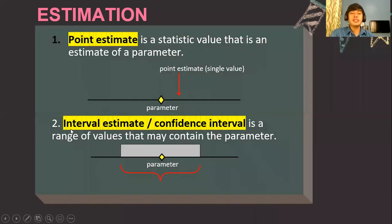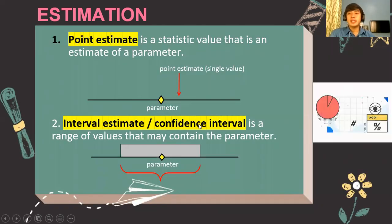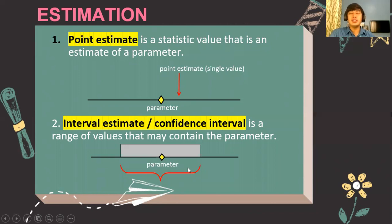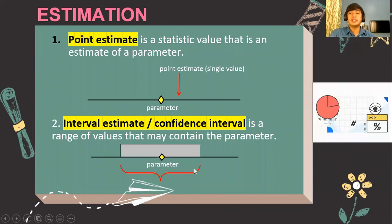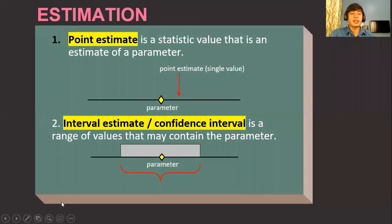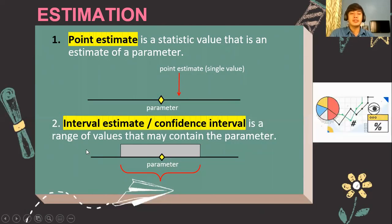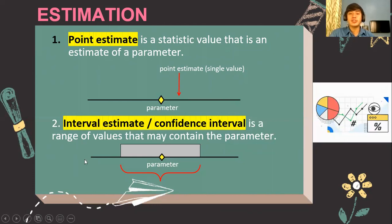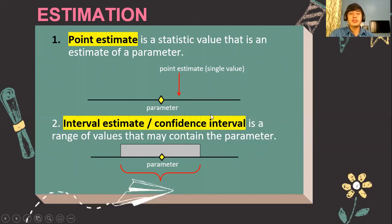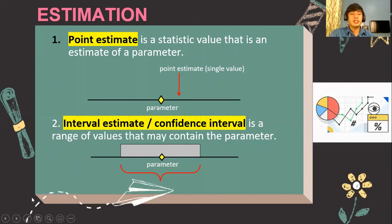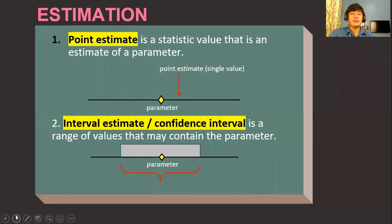For the interval estimate of a population, when a statistician reports a range of values, it means it may contain a certain parameter — and there are also parts in which it is not contained in the parameter. That is an interval estimate. The interval estimate of a population is always anchored with its confidence interval, which you will learn about later.